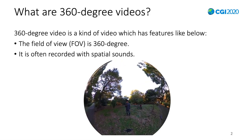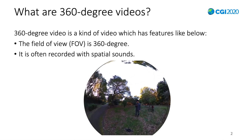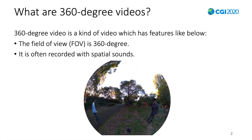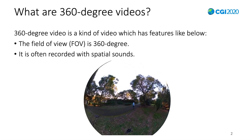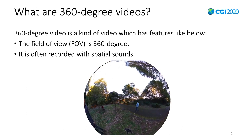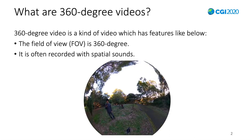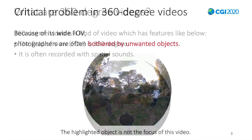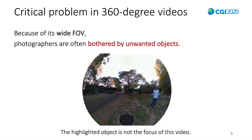360-degree video is a kind of video featured by a field of view — namely FOV — of 360 degrees, and it is often recorded with spatial sounds. In 360-degree videos, there is a critical problem: many photographers are often burdened by unwanted objects because of its wide FOV. See this video, please.